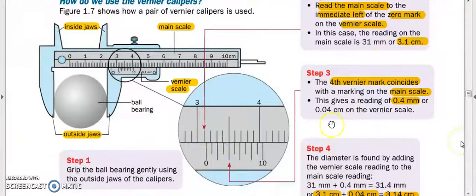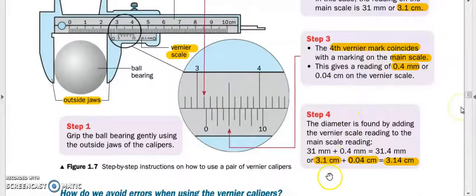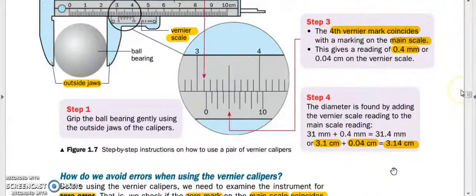Step number two, we look at which line is directly in line with the main scale. The vernier reading that is in line with the main scale is 1, 2, 3, 4, so 0.4 millimeters or 0.04 centimeters. Final answer: just 3.1 plus 0.04, that gives us 3.14 centimeters.